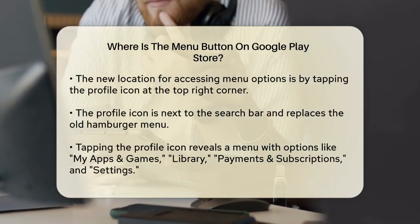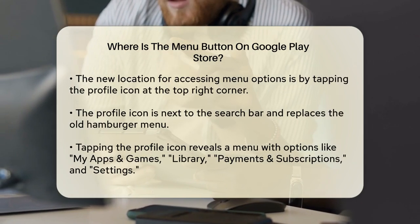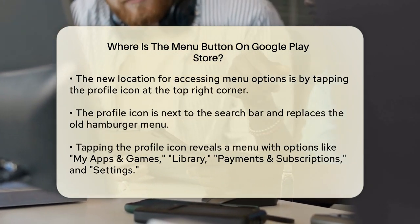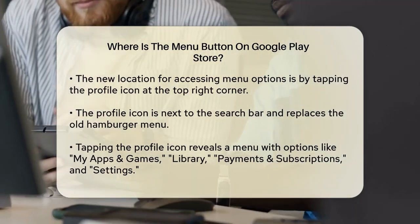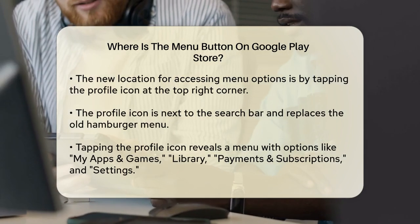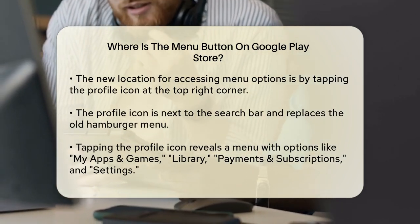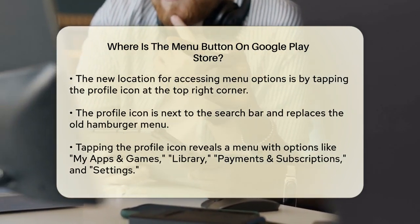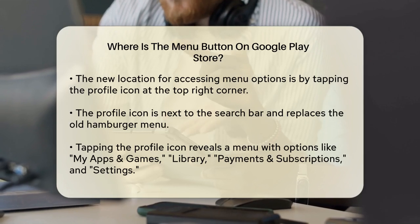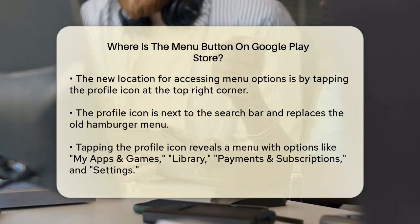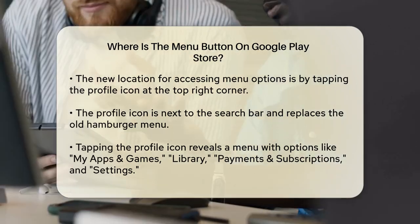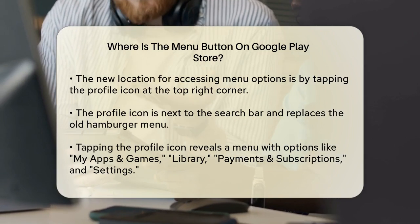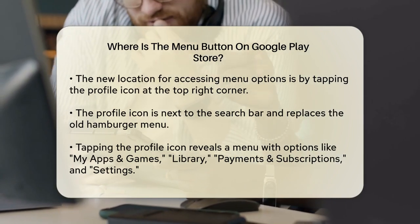As of early 2021, Google moved the menu items to a new location. Now, you need to tap your profile icon, which is usually located at the top right corner of the screen, right next to the search bar. This profile icon replaces the old hamburger menu and gives you access to all the settings and features you're used to.